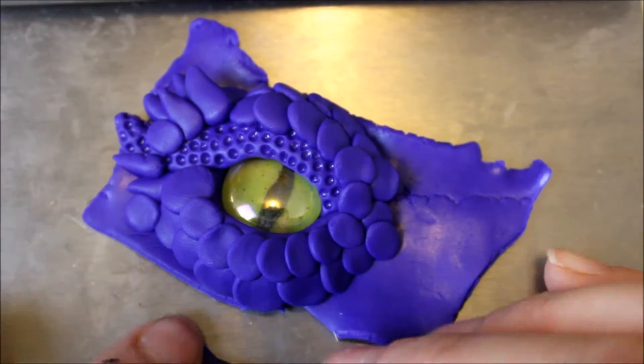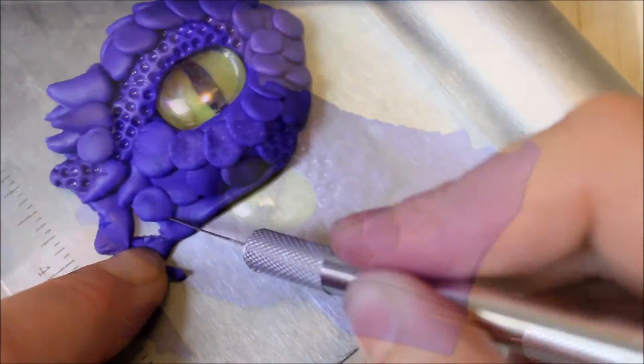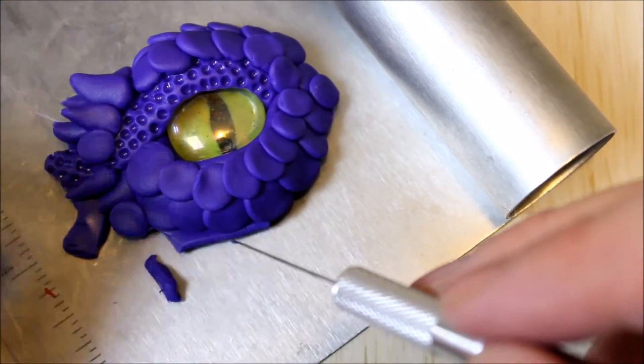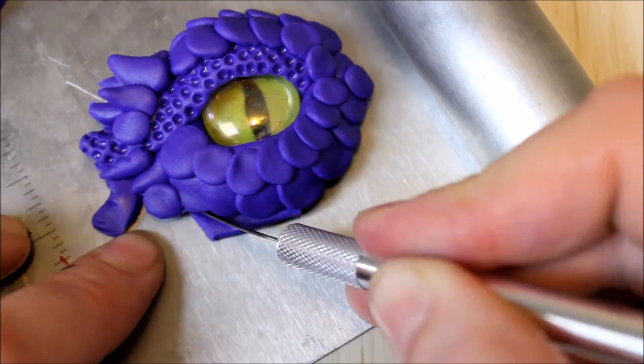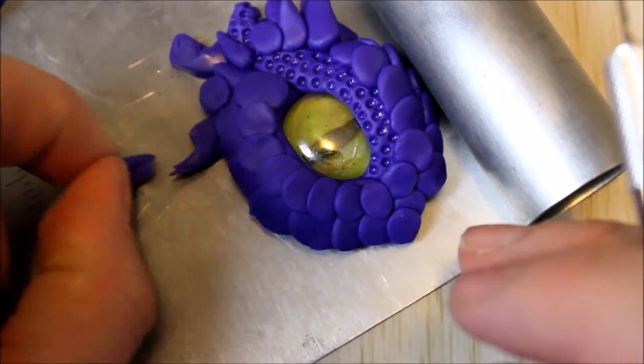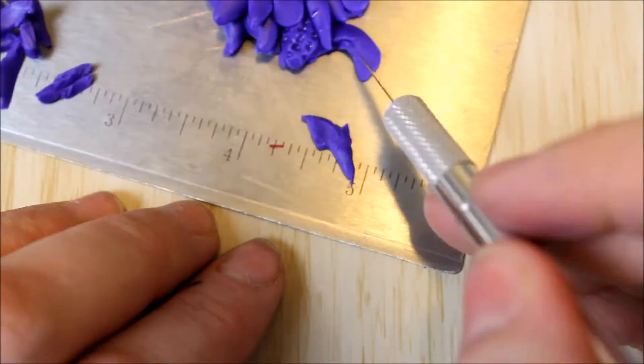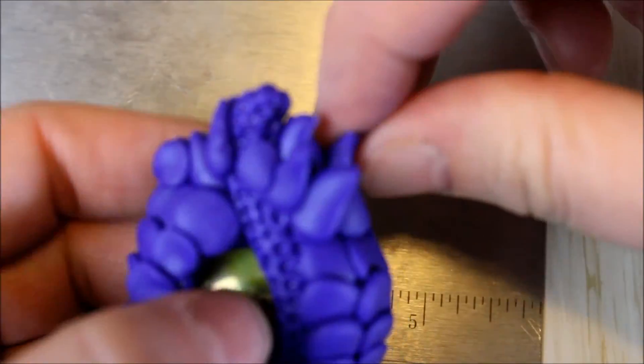And then once you're happy go ahead and trim off the excess of your clay. Now depending on what you want to do with yours you can turn these into magnets or actual jewelry pieces. Attach anything you need to at this stage before you bake if you're going to make it into jewelry.